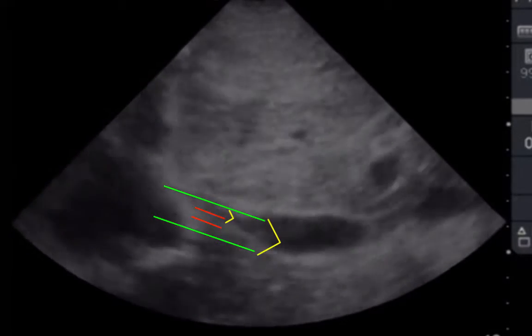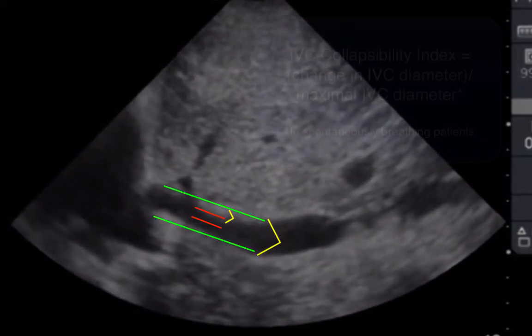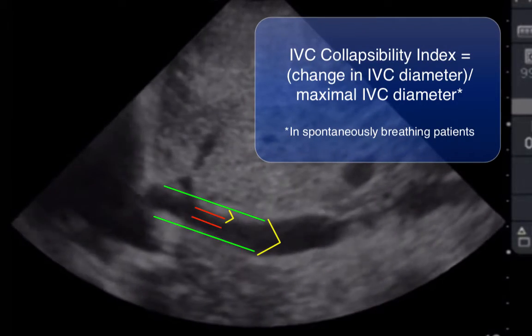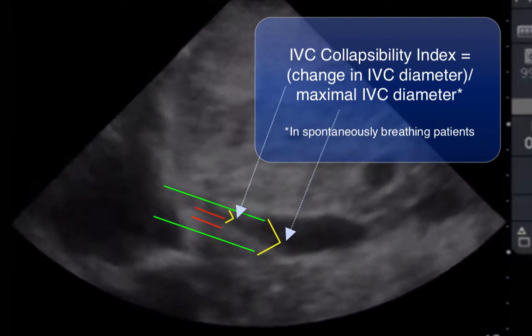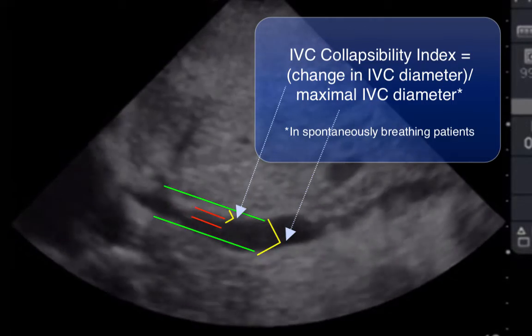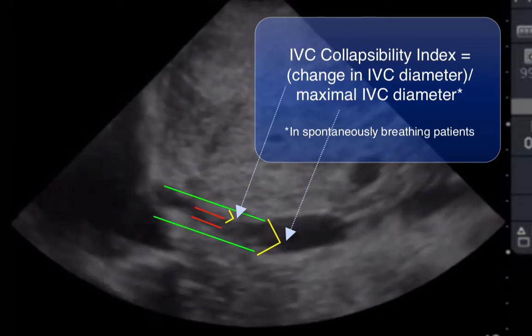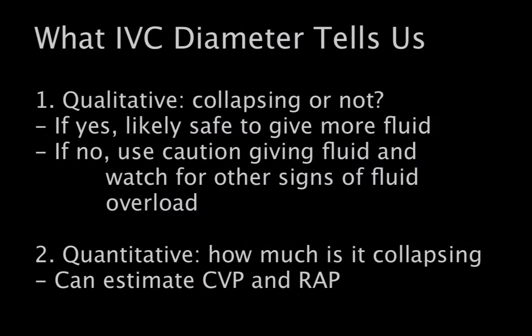When IVC respirophasic variability is measured quantitatively as the IVC collapsibility index, it can be used to estimate right atrial pressure and venous return accurately. This means that IVCU can be useful in two ways: by qualitative assessment of collapse yielding a dichotomous collapsing or not-collapsing result, as well as a quantitative estimation of CVP.